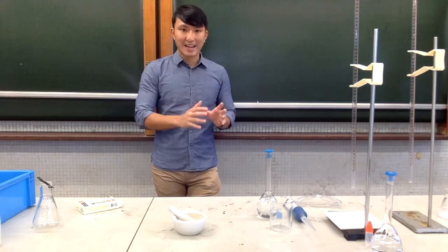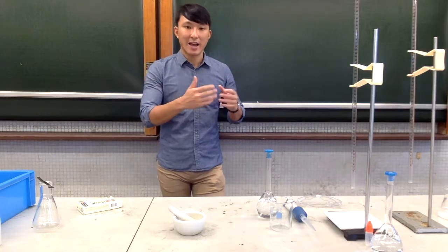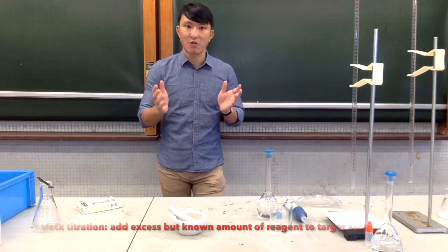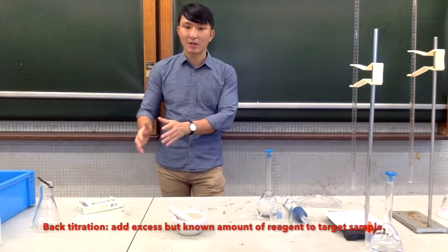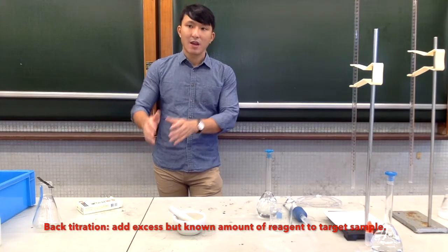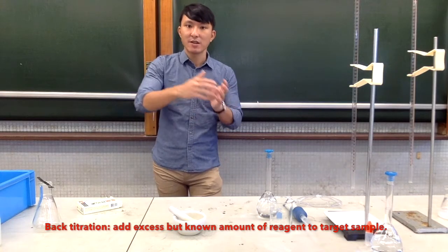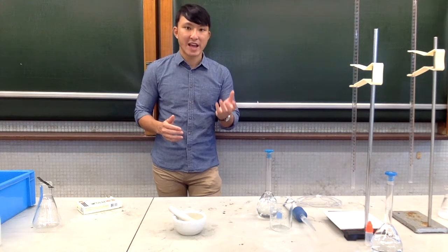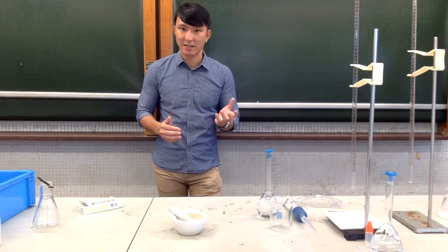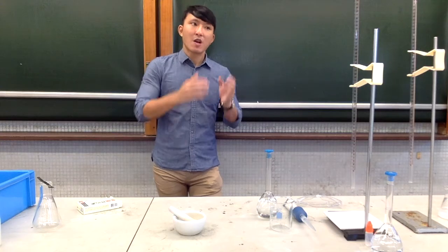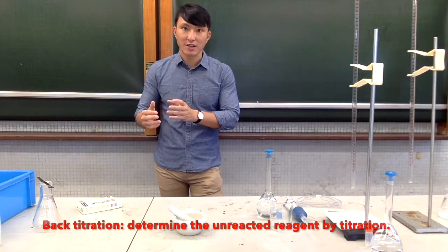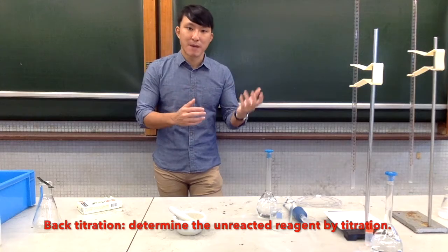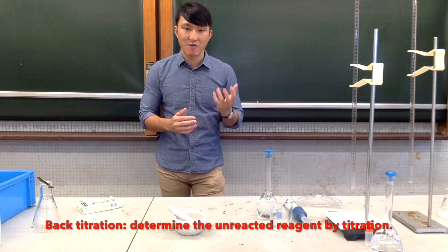However, for back titration, we attempt to add excess reagent into our target sample. When the excess reagent reacts completely with our target product, there will be some reagent left unreacted. Now we will perform a titration to find out the amount of unreacted reagents.